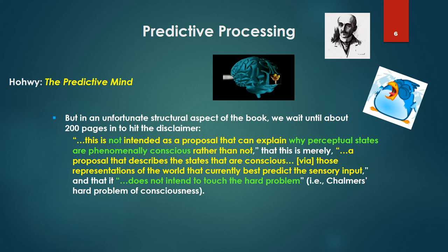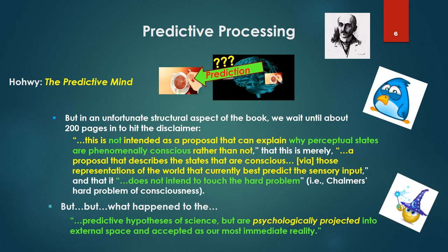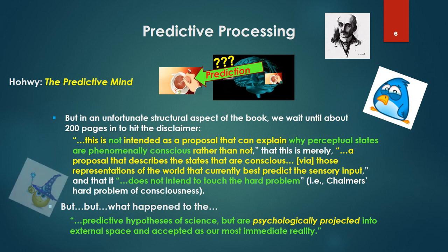So this is rather disappointing because we find that all he's really saying is he has a proposal that is claiming that the states that are conscious are so via the predictive hypothesis, the downward flow. But he can't explain why those become the image of the external world. And so one wonders, but what happened to the predictive hypothesis of science that are psychologically projected into external space and accepted as our most immediate reality? So apparently the magic can't be delivered on.